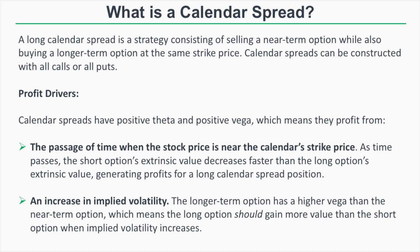The second profit driver comes from the spread's positive vega value. Positive vega means the spread should profit from an increase in implied volatility, because the longer-term option has a higher vega value than the near-term option, which means the long option should gain more value than the short option when implied volatility increases.